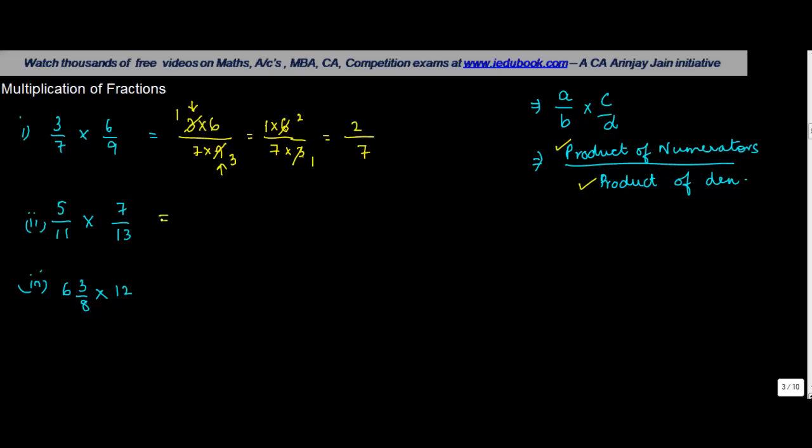In this case we have 5 upon 11 and 7 upon 13. So we write this as 5 into 7 divided by 11 into 13. Now if you notice none of the numbers is divisible by each other, or there is no common number which divides both of them, so we just write the product of the numerator divided by the product of the denominator. 11 into 13 is 143, 5 into 7 is 35.